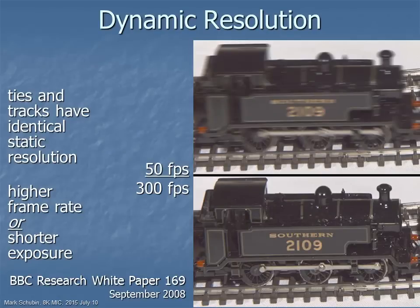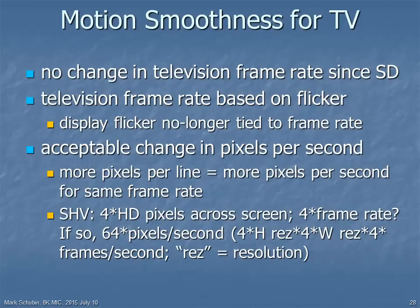The image of Mont Blanc was static, but when images move, dynamic resolution is important. It can be increased either by going to a higher frame rate or simply by reducing the exposure time per frame with the same frame rate. Comfortable television viewing requires smooth motion portrayal. Television frame rates were established initially to reduce flicker perception, but today flicker is no longer tied to frame rate, so smooth motion representation is what's important.